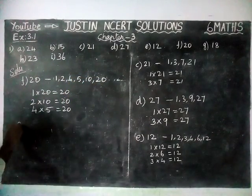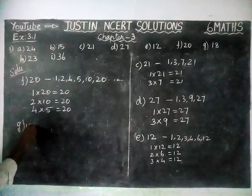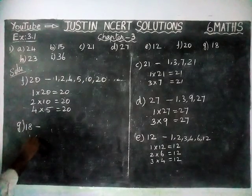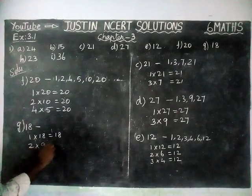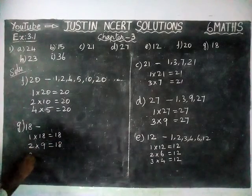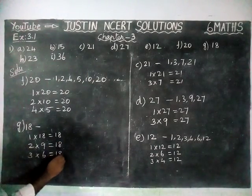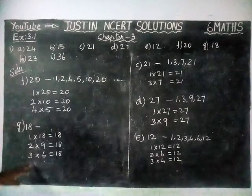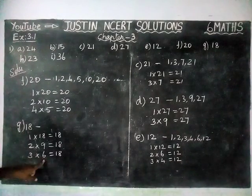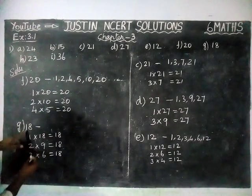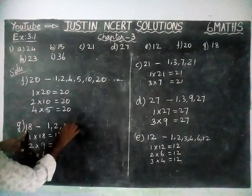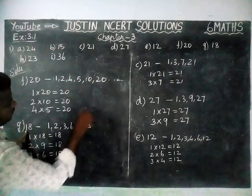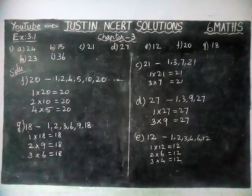Next, factors of 18. 1 into 18 is 18. 2 nines are 18. 3 sixes are 18. Then 4 will not come, 5 will not come, then 6, 9, 18 are already covered. So factors of 18 are: 1, 2, 3, 6, 9, and 18.